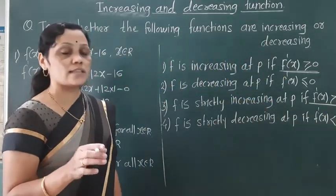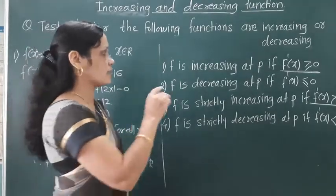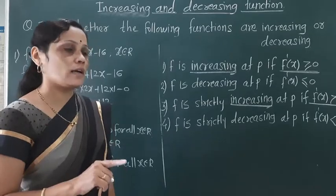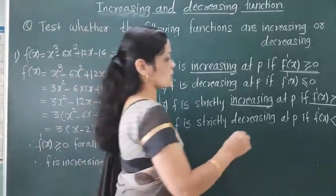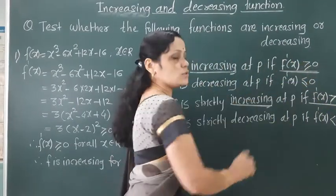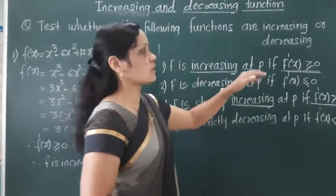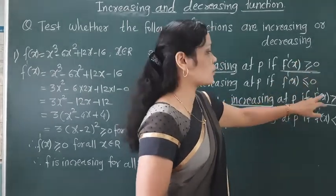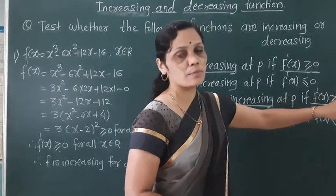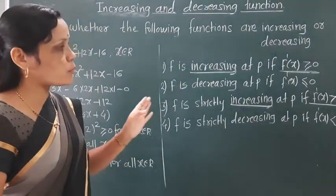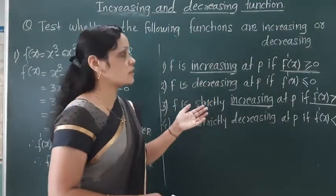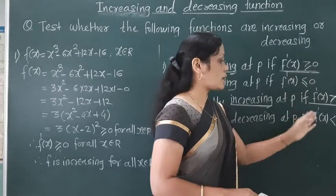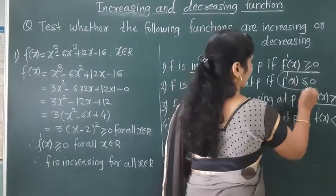If F'(x) is strictly greater than 0, the function is increasing. If F'(x) is equal to 0, the function is still considered increasing. If F'(x) is strictly less than 0, then the function is decreasing.